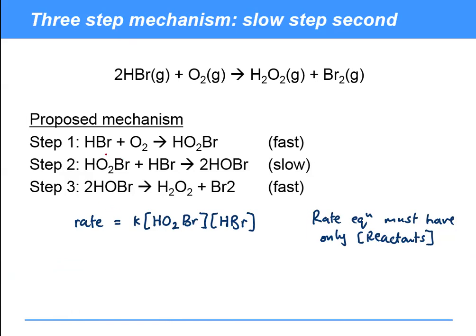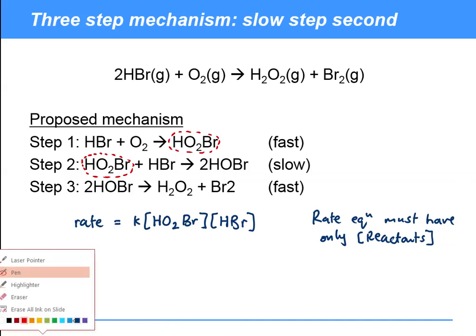This HO2Br intermediate was actually formed in a fast step. What we can do here is say that the concentration of that intermediate is determined by the concentration of the species which formed it. This is only an approximation, and there are ways of showing this with more rigor, but for A level purposes it's sufficient to replace the concentration of the intermediate with the product of the concentrations of the species that formed it in preceding fast steps.